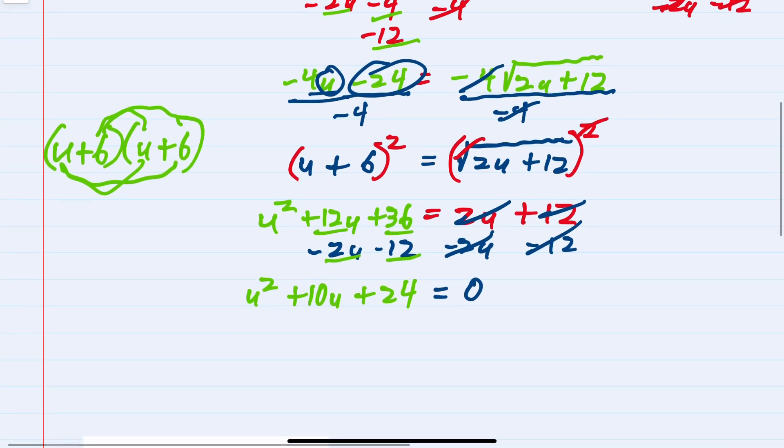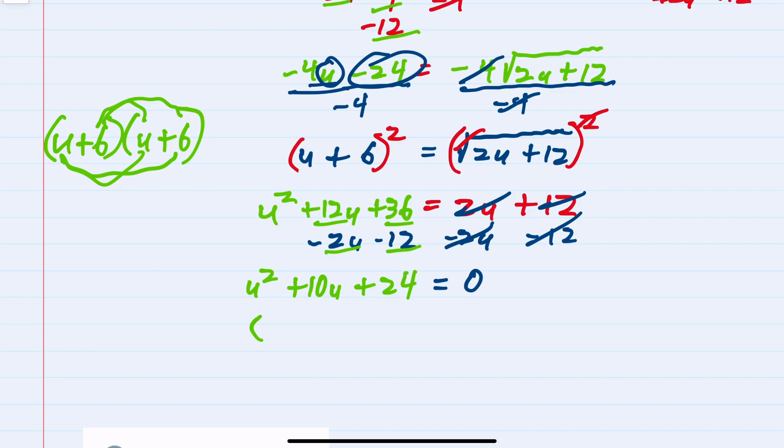To solve for u, we factor the quadratic as (u + ?)(u + ?). The factors of 24 are 1 and 24, 2 and 12, 3 and 8, 4 and 6. We know these signs are the same and add to a positive. Since the factors of 24 have to add up to 10, the combination 4 and 6 is the one that works.